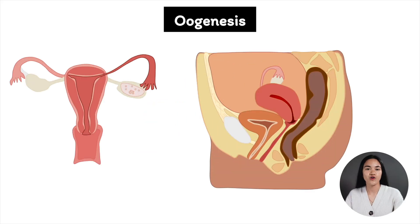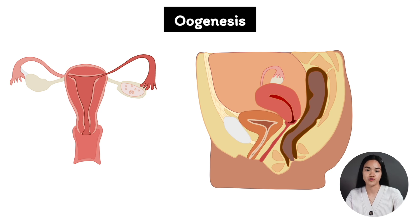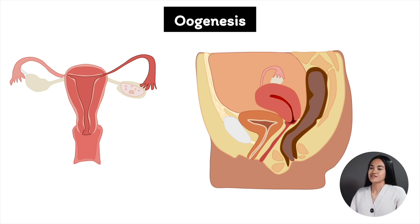In this video we're going to cover oogenesis, the production of female gametes in the ovaries. At the end of this video you'll understand the phases of oogenesis and how a mature ovum is produced. We're also going to break down the overview of the menstrual cycle.